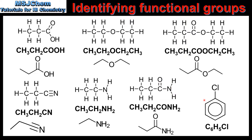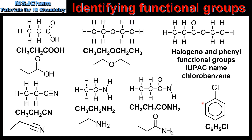In our last example, we have a C6H5 group bonded to a chlorine atom, so we actually have two functional groups in this molecule. We have the C6H5 group which is a phenyl functional group, and a chlorine atom which is a halogeno functional group, which can also be called a chloro functional group.